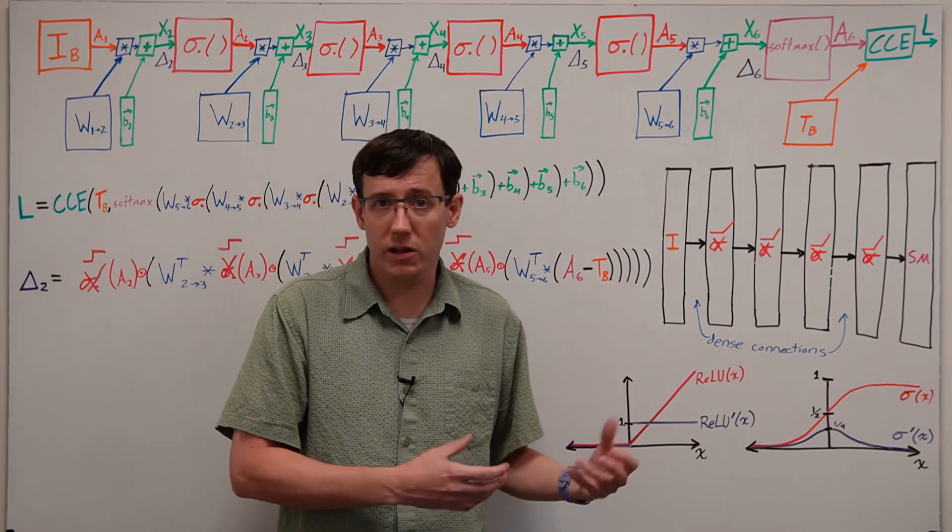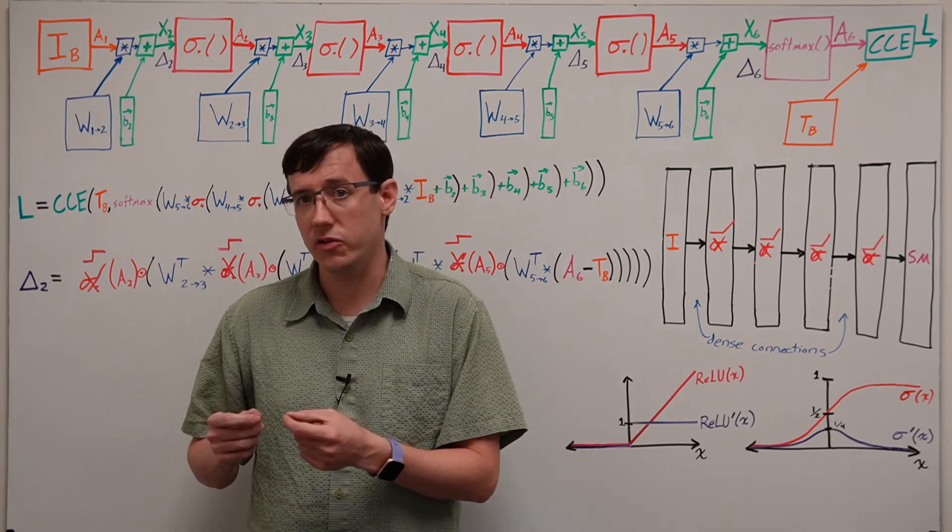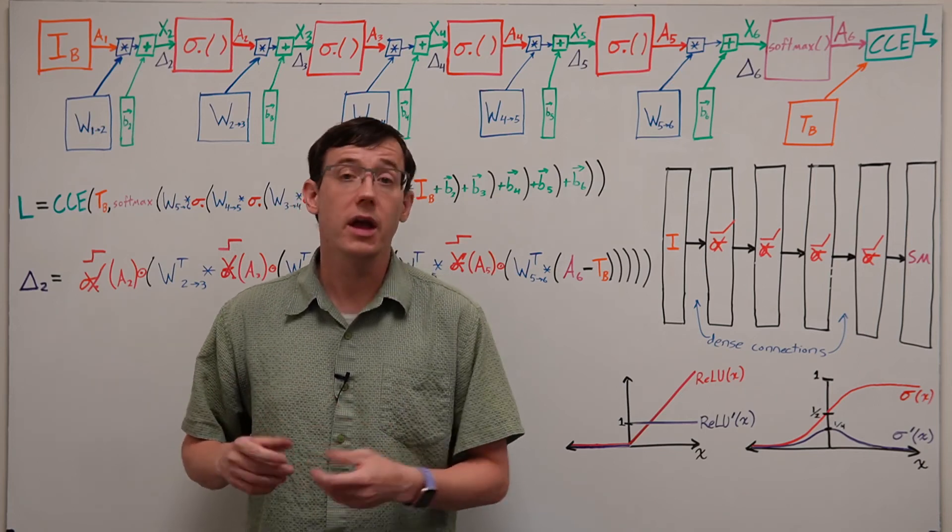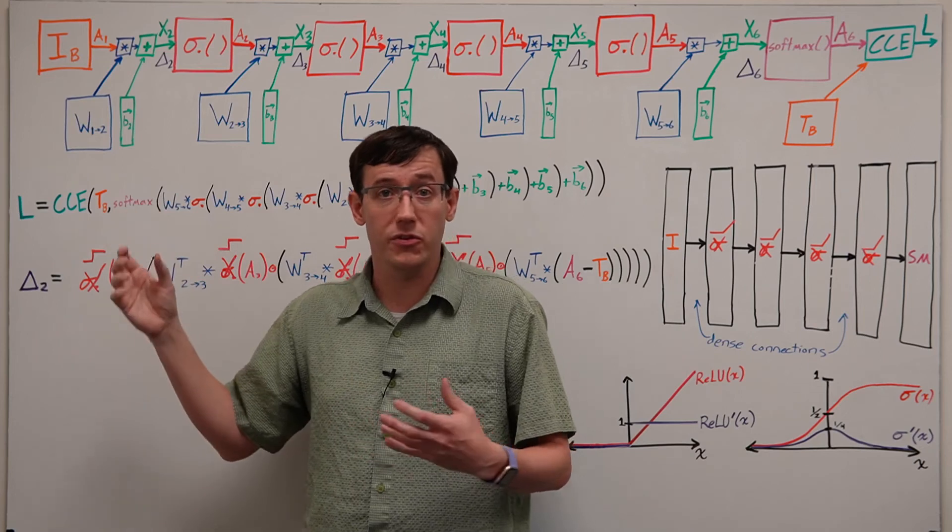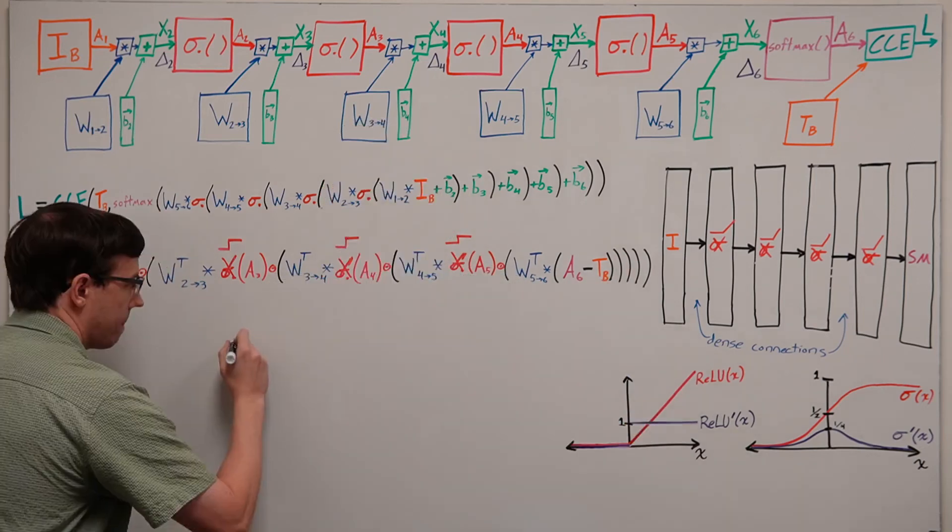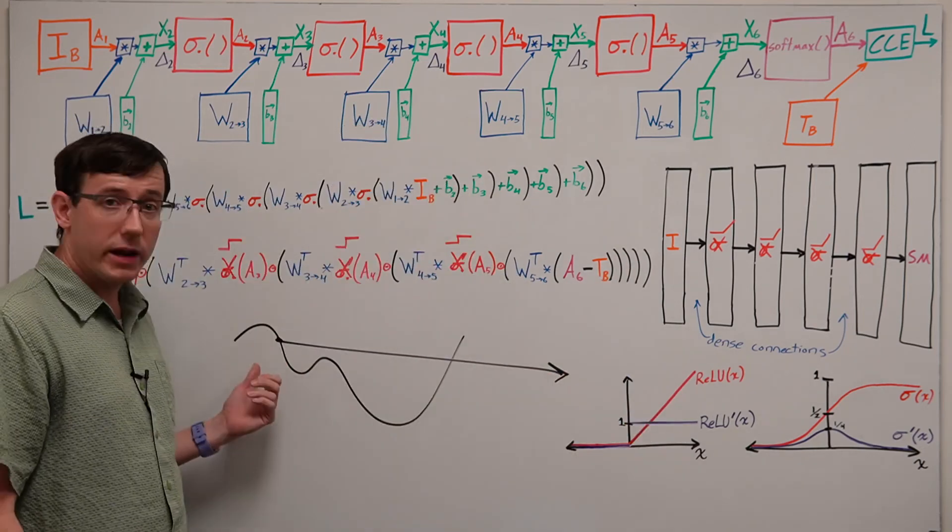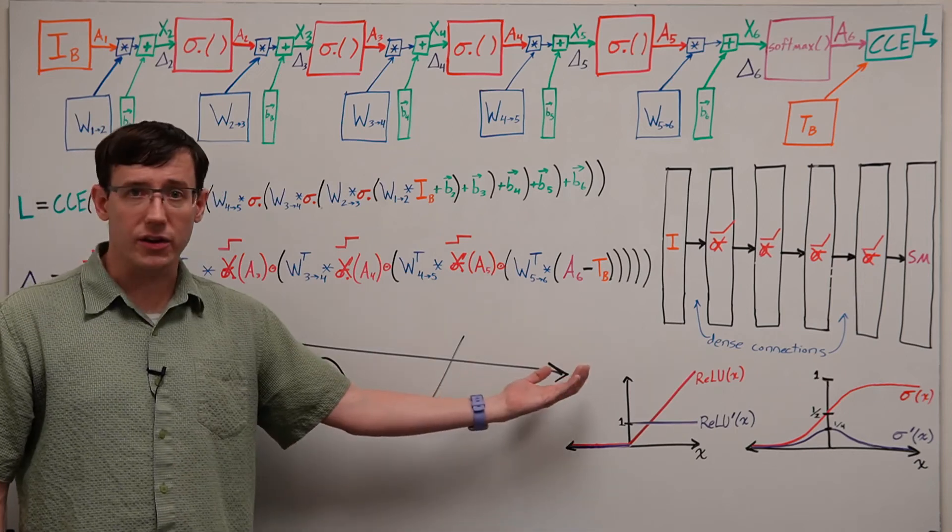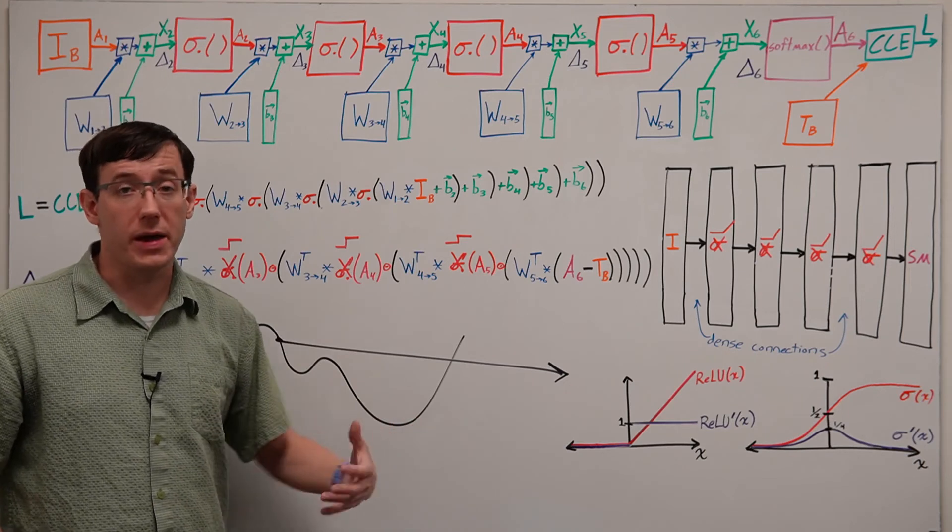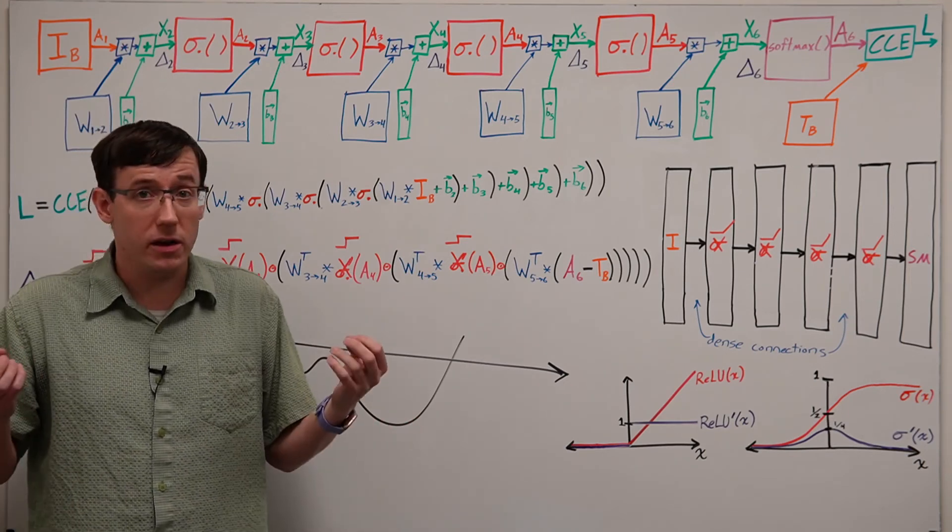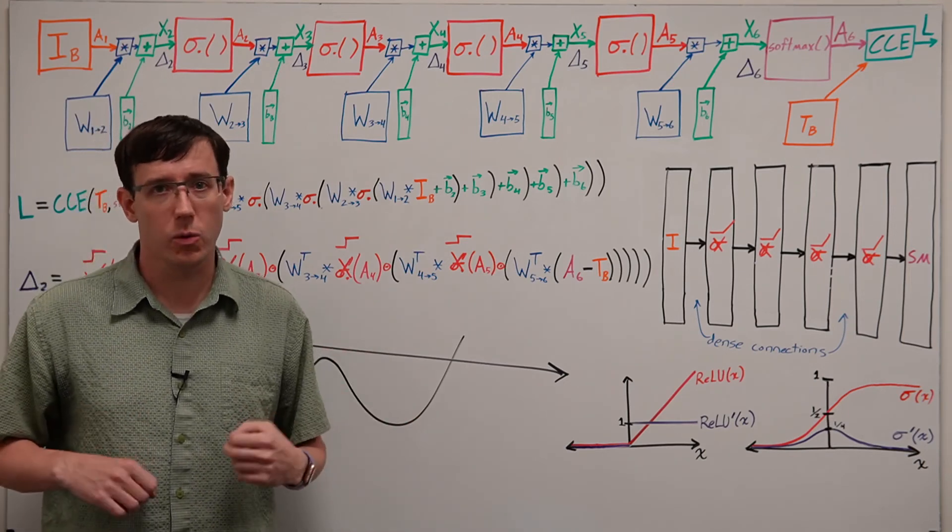Much like vanishing gradients resulted in taking gradient descent steps that were far too small, exploding gradients mean that we will take gradient descent steps that are way too big. If gradient descent takes gigantic steps, that may not result in moving down the loss landscape at all, and so there may be no way to effectively train the network.